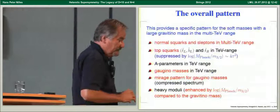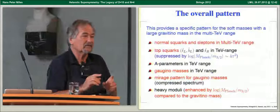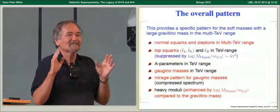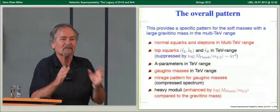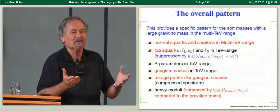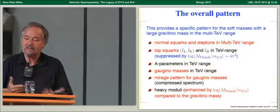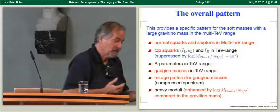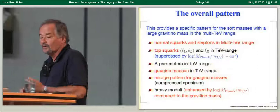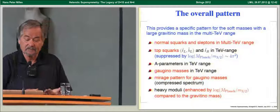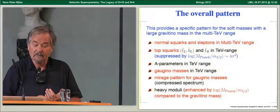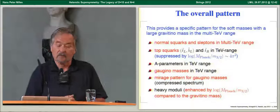Fields in the untwisted sector feel remnants of N=4. Some may know the no-scale model structure where supersymmetry is broken with non-vanishing gravitino mass, but all soft terms vanish — this can be understood from a torus compactification. The suppression of the mirage scheme works not only for gauginos, but also for particles in the untwisted sector — the top quarks and Higgses. A-parameters and gaugino masses are in the TeV range, with the compressed gaugino mass spectrum typical of the mirage scheme. Moduli are heavy, enhanced by the logarithm.